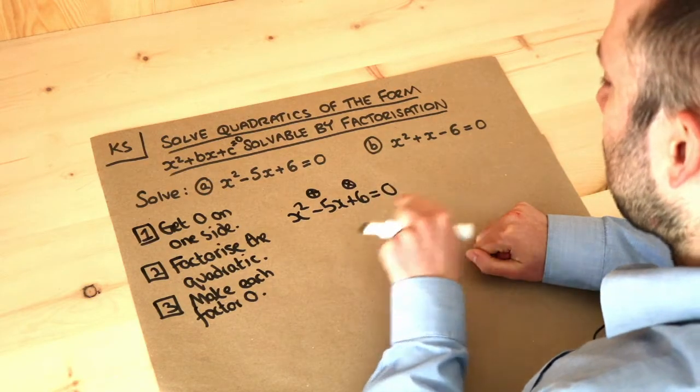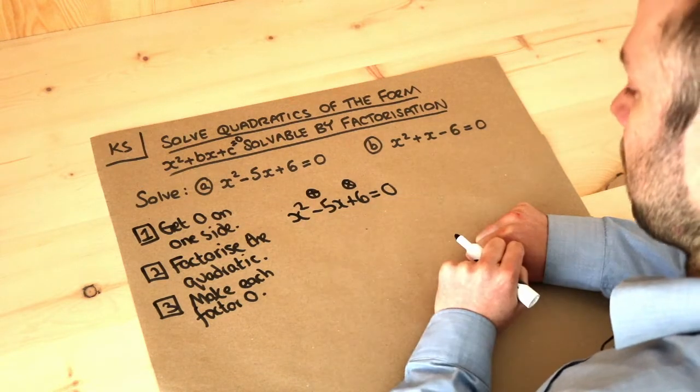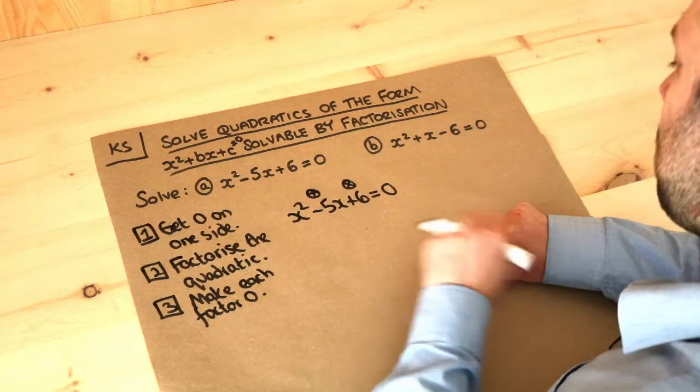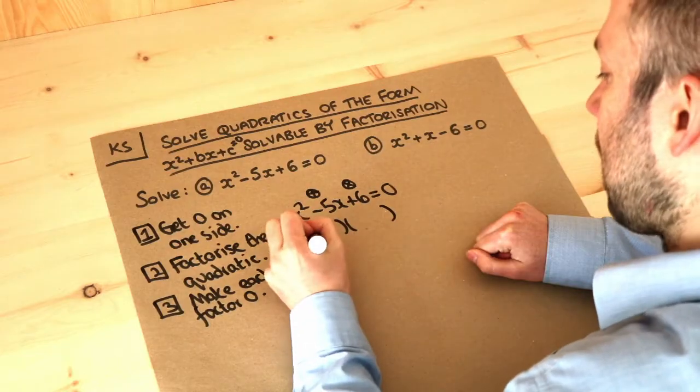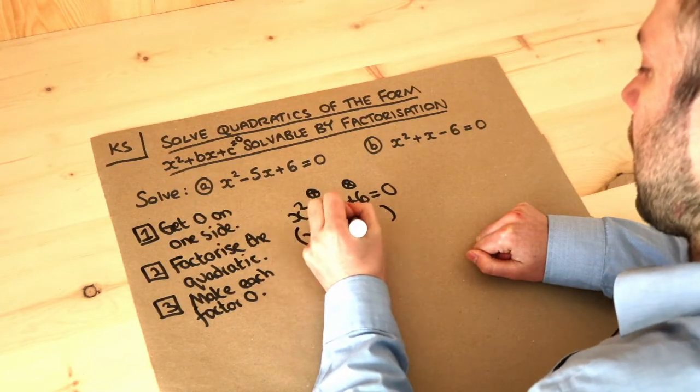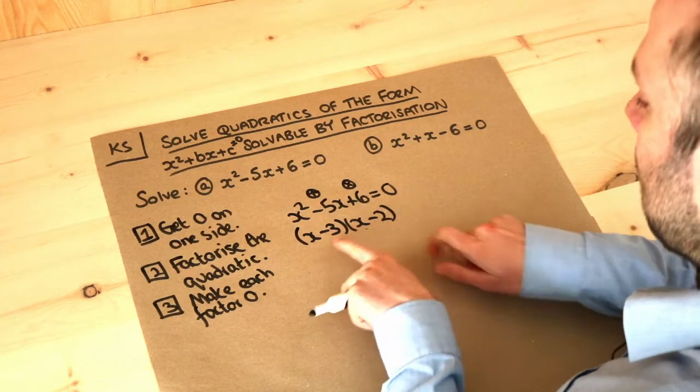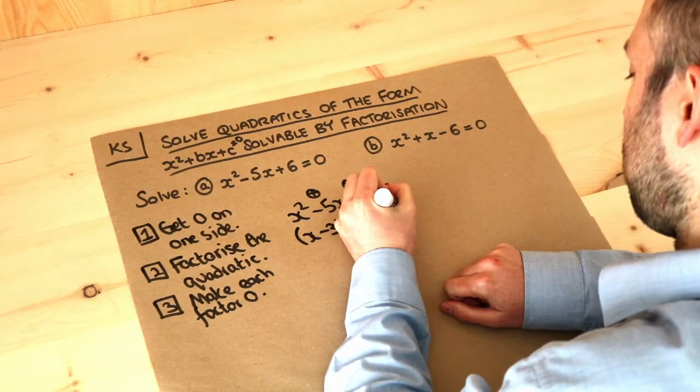Now if we had minus three and minus two, minus three and minus two add to give minus five and they multiply to give positive six because negative three times negative two, negative times negative is positive. So that means we factorize it into x minus three and x minus two. So we use those two numbers we found that add to give minus five and times give six as the two numbers here with x before each one. That's equal to zero.